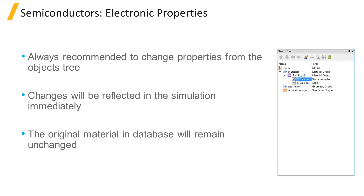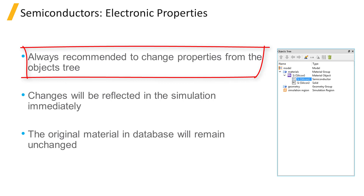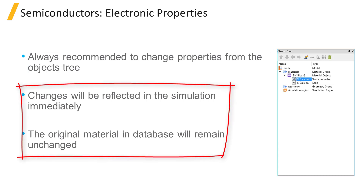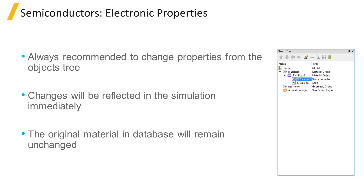Since the material added to the objects tree is a copy of the material existing in the material database, it is always recommended to make changes to material properties from the objects tree rather than from the material database. This way, the original material properties will remain unchanged, and the changes made will be considered by the solver immediately. Otherwise, the material has to be added to the objects tree again after changes have been made in the material database.